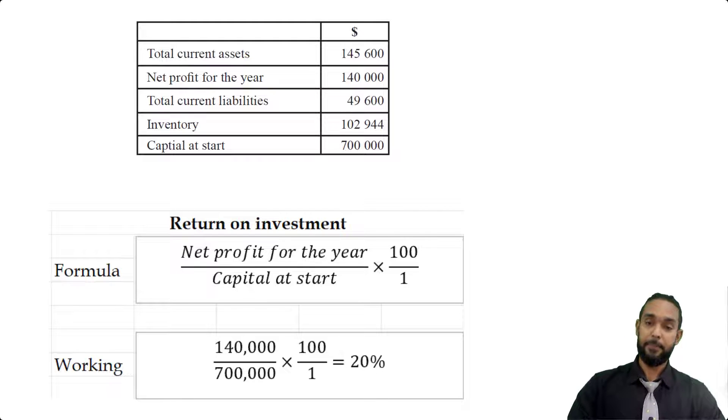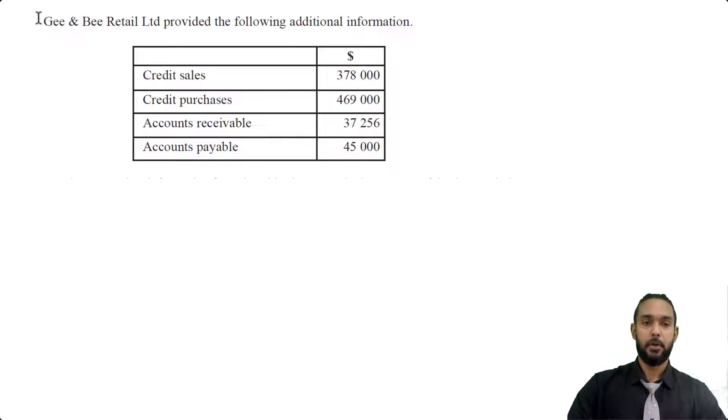Now, some textbooks and some teachers use average capital, which is opening capital plus closing capital divided by two. If you don't have closing capital, then you can't find average capital. One workaround for that, that some people do, is they let closing capital equal to zero, but I wouldn't advise that. So again, you can only use what they give you in the information they give you in the question. So I think that this should be fine. This should suffice. 140 divided by 700,000 multiplied by 100 is 20%.